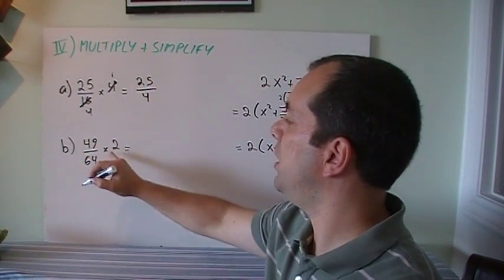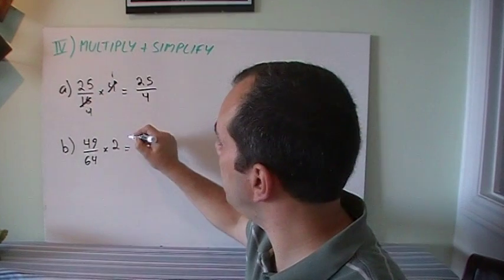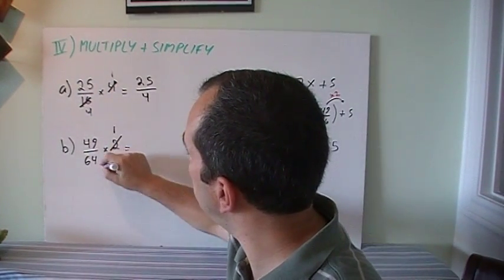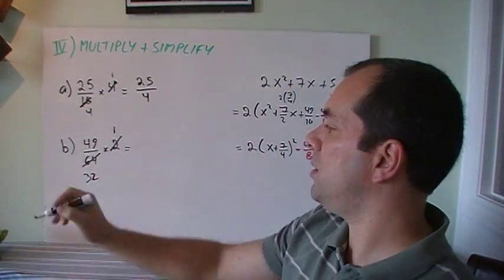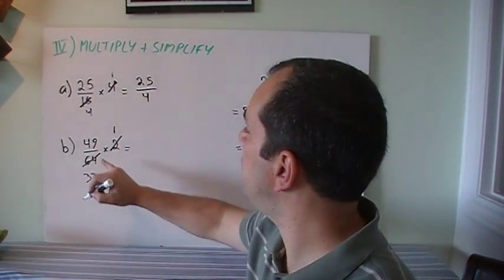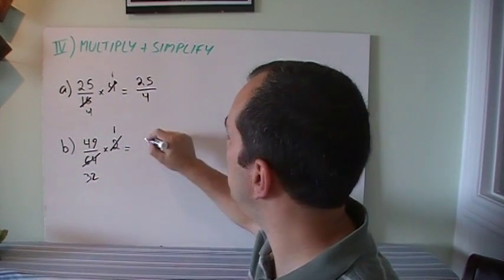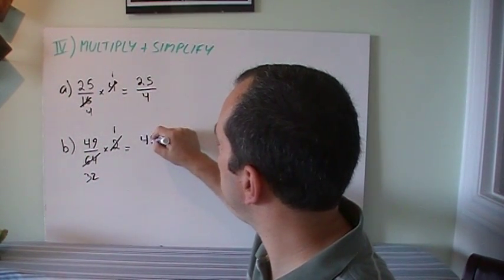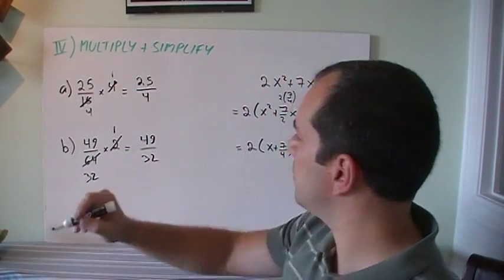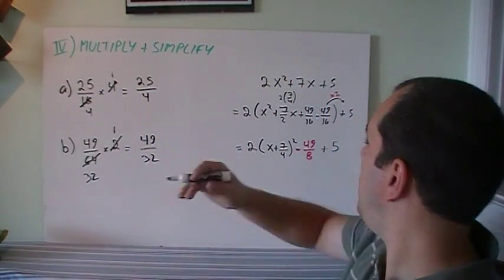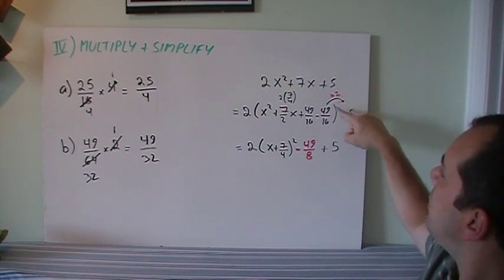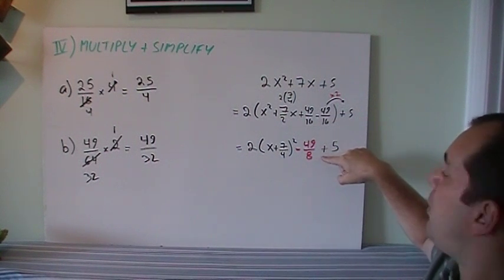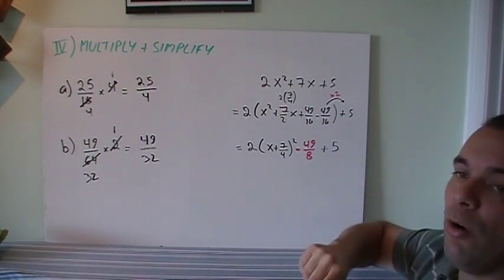Same thing here. If I've got 49/64 times 2. Well, I can cancel out or simplify the 2 and 64. 64 divided by 2 is 32. So now I've got 49 on top and 32 on the bottom. So in my example, when I take the 49/16 times 2, basically the 2 is going to simplify with the 16 and the 2 will disappear and the 16 will become 8. So now I have -49/8.